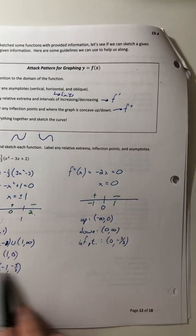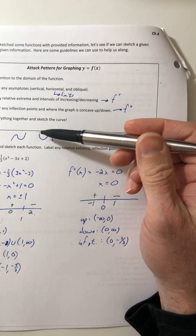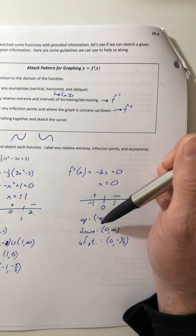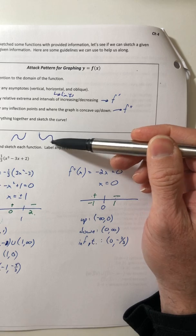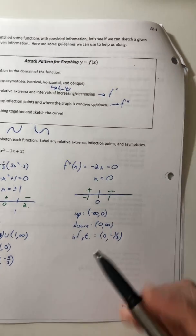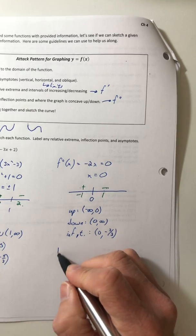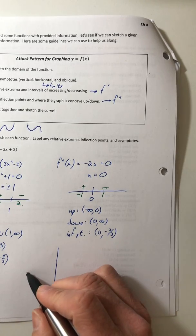So all of the information here that we just analyzed matches up to this graph, because it's concave up for the first half, concave down with one point of inflection. So now let's just stick it on to a graph.